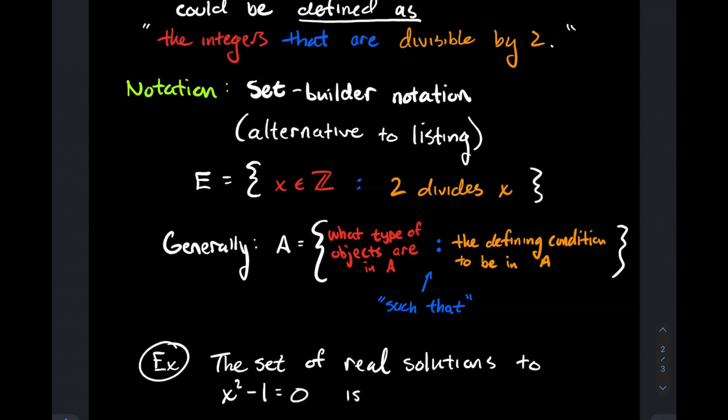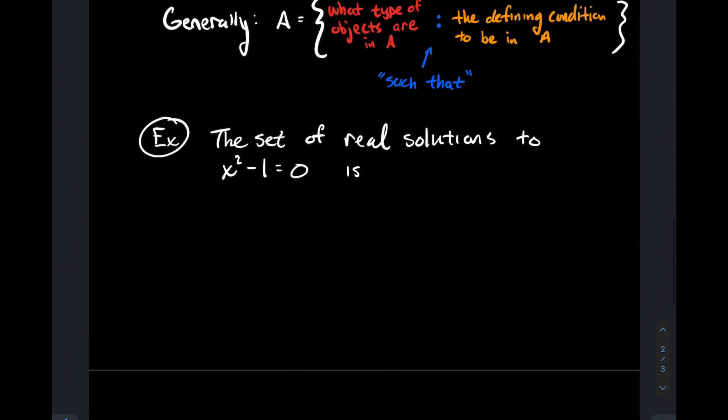Let's look at some more examples. The set of real solutions to x² - 1 = 0. I'm thinking college algebra—I'll solve that equation however I want. Maybe I factor, maybe I move 1 over and take the square root of both sides. I should get positive and negative 1. So to communicate that idea differently, the set of real solutions is the set that has -1 and 1 in it.